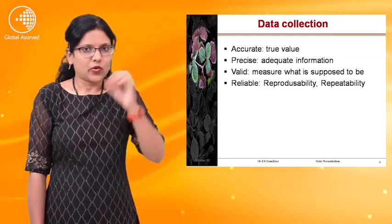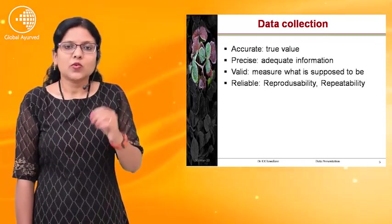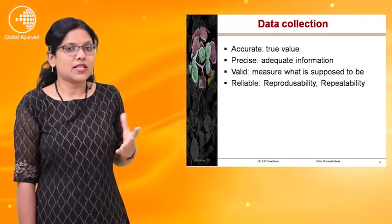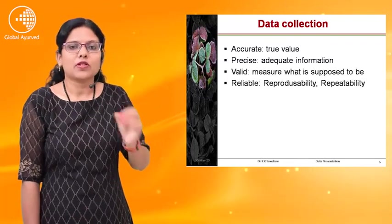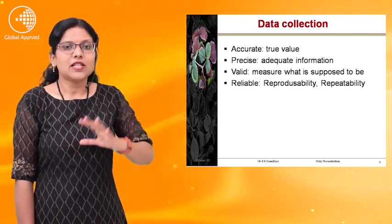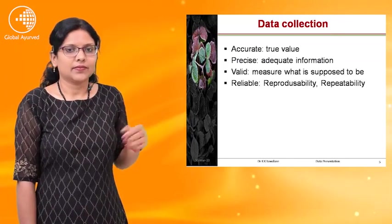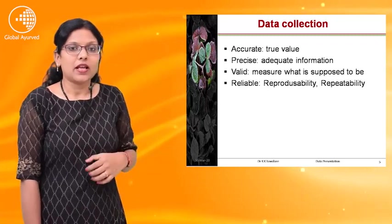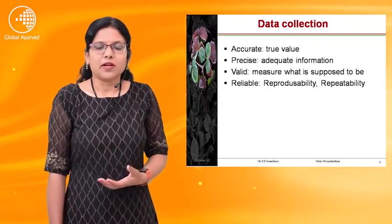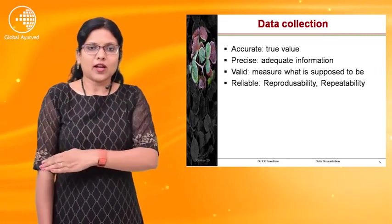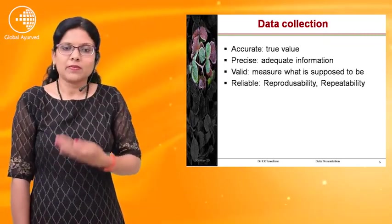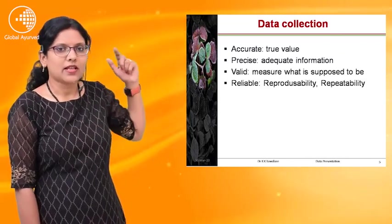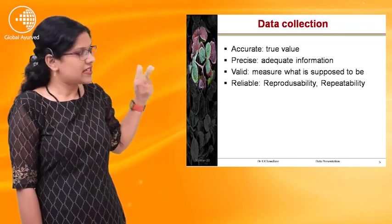Data collection should be accurate — it measures only the true value. Precise — it should provide adequate information about the variable, meaning the detailing of that variable. Valid — it measures what is supposed to be measured, so validity of data should be there. Reliable — means reproducible and repeatable. So data must follow all these qualities: accuracy, precision, validity, and reliability.